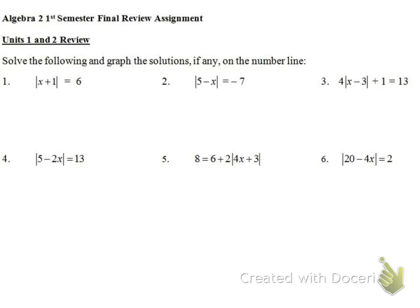In the first one, we have |x + 1| = 6. To solve, we take it outside of the absolute value and say x + 1 = 6 and x + 1 = -6, because the inside of an absolute value can be positive or negative. Solving the left equation gives x = 5, and the right equation gives x = -7.